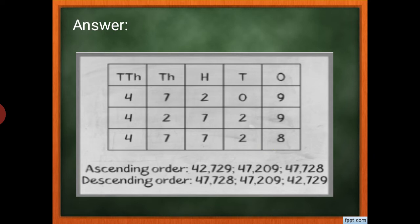In descending order, the biggest is 47,728, then 47,209, and the smallest is 42,729.